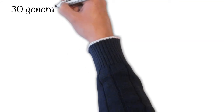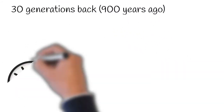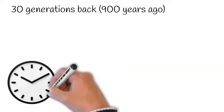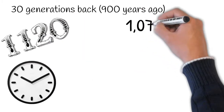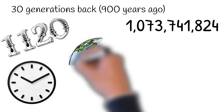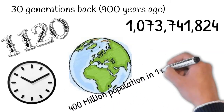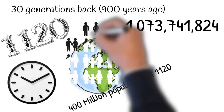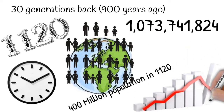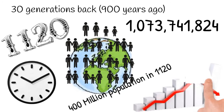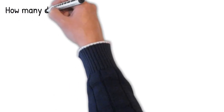Now if we go even further to 30 generations — that is 900 years ago — the number is really huge: one billion and seventy-three million ancestors. That's even larger than the number of people who lived on the planet at that time, which was around 400 million. So in reality, families often have common ancestors and they appear in multiple places in our family tree, with marriages among cousins after a few generations.